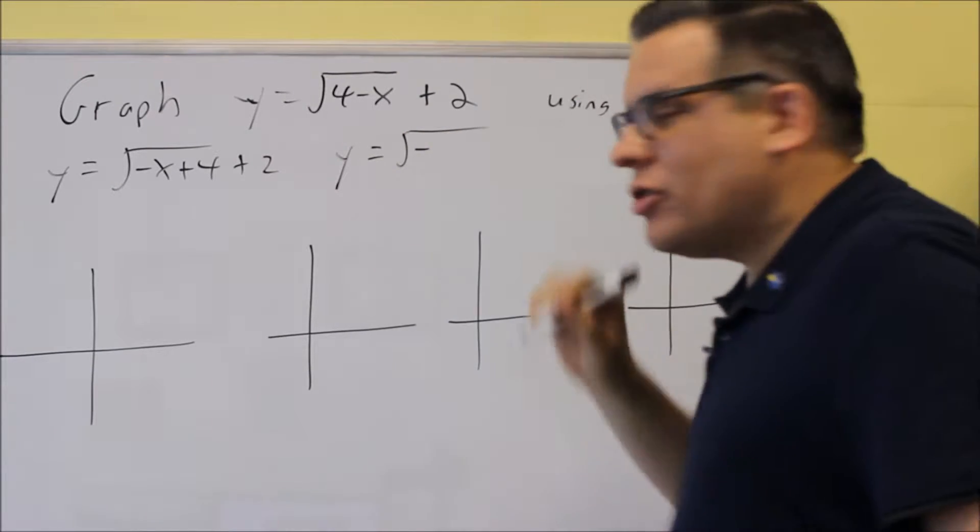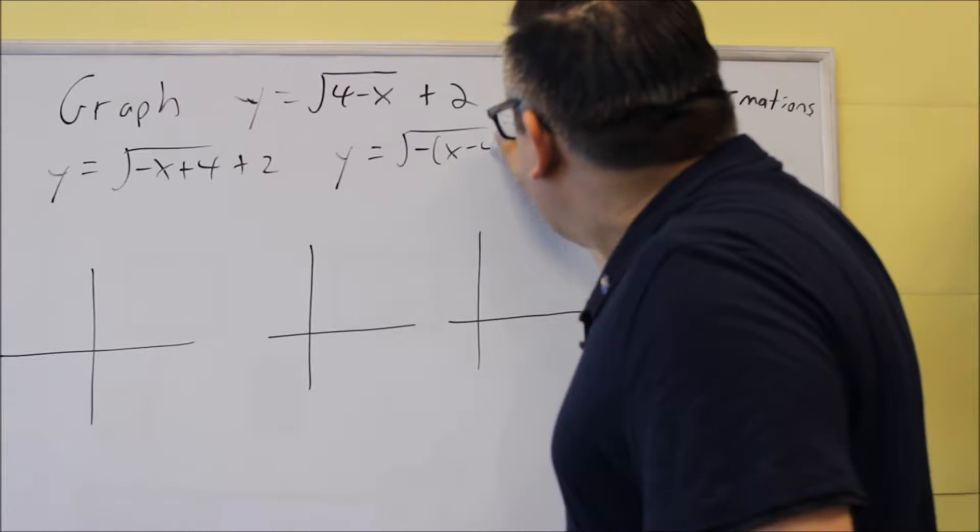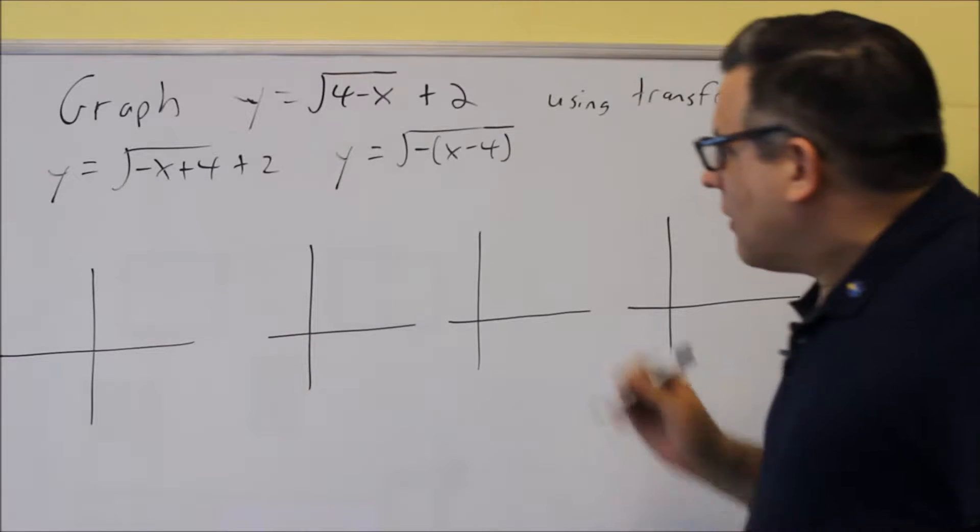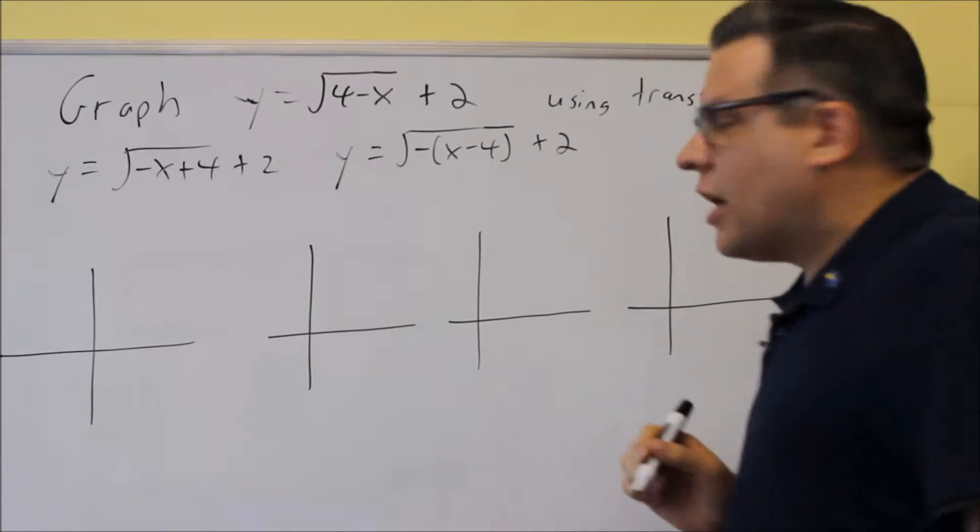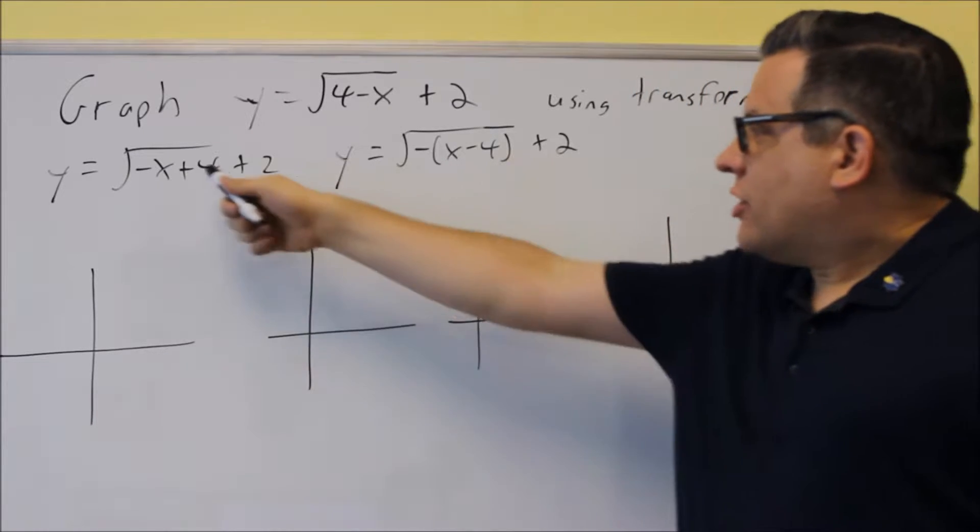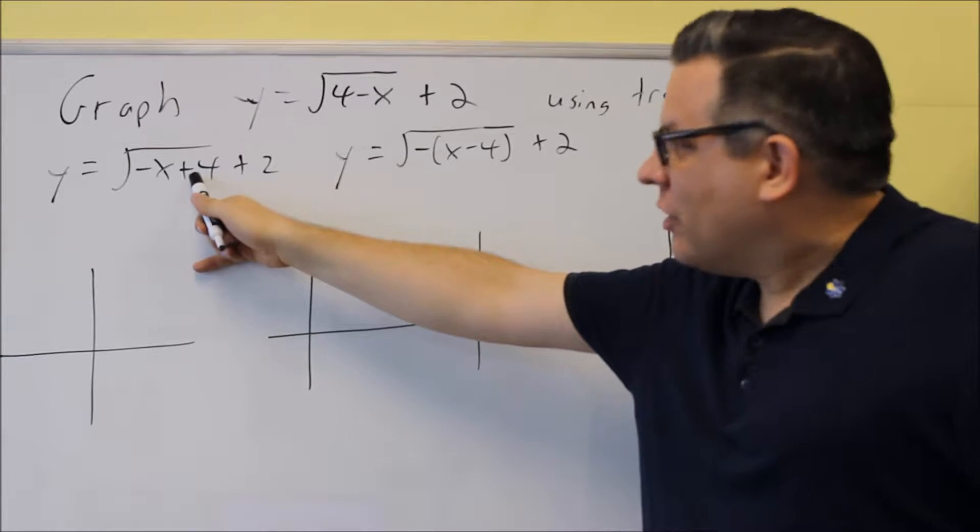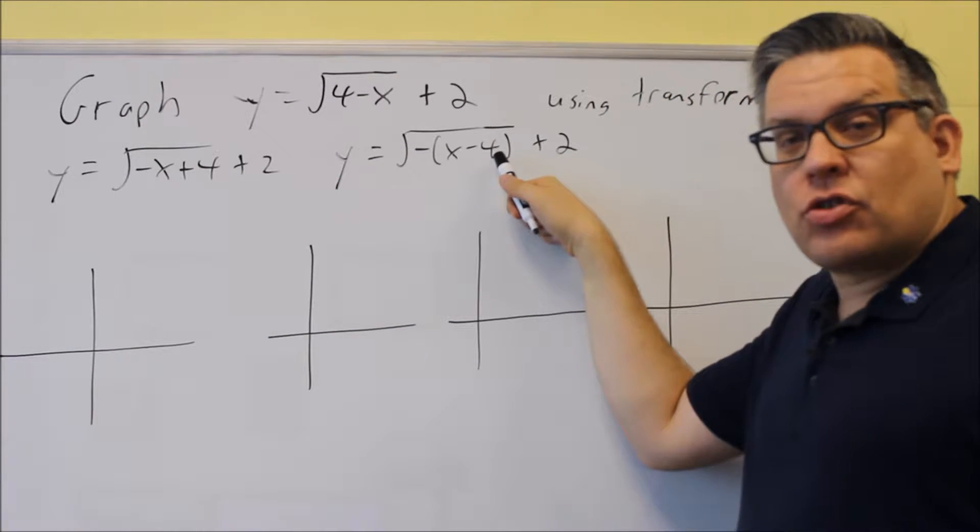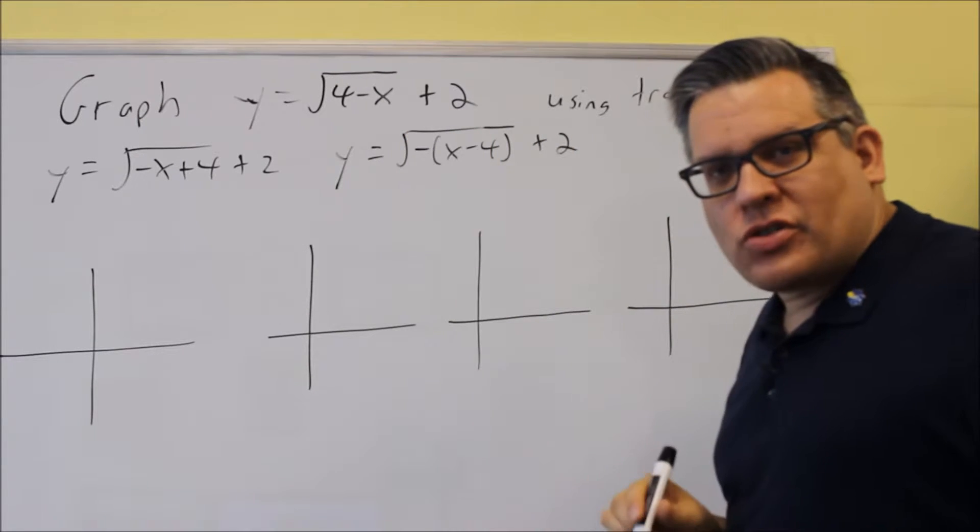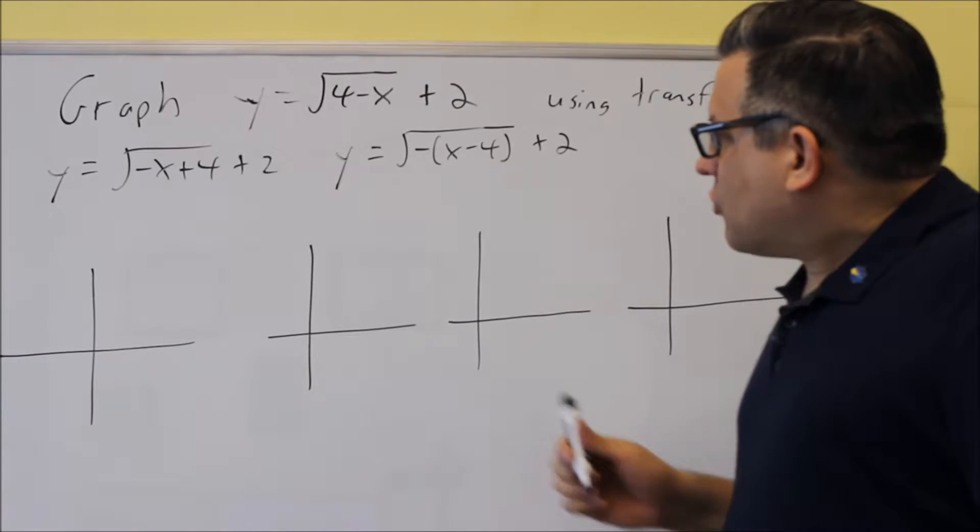So, if I factor out a negative, you're really doing factoring out a negative 1 here. What that will do is it will change that into a minus 4 instead. And then, you've still got the plus 2 on the outside. So, now that we've done that, notice that the sign is now plus. So, we're actually not going to move this graph to the left. We're actually going to move it to the right because we did this factor step.